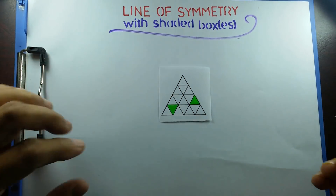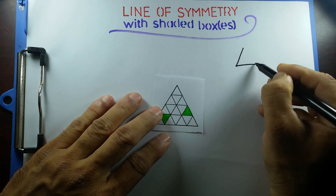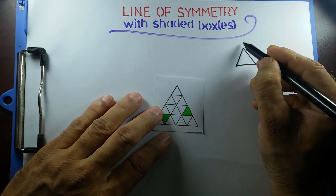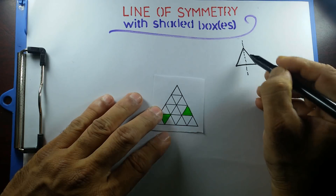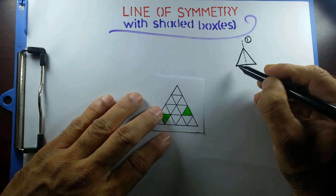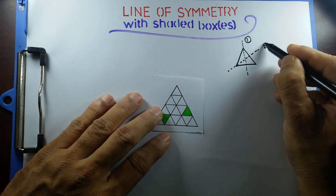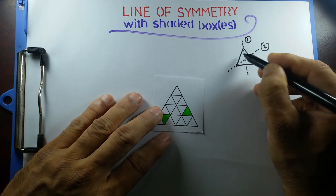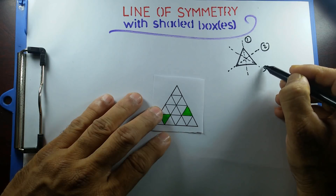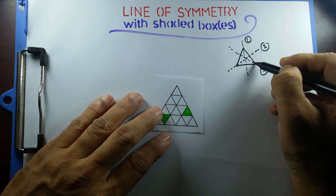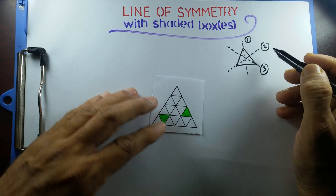I hope you remember from the last video that when I have an equilateral triangle, from the vertex to the opposite side if I draw a perpendicular line, this is one line of symmetry. The same applies from each vertex to the opposite side, giving us three lines of symmetry.